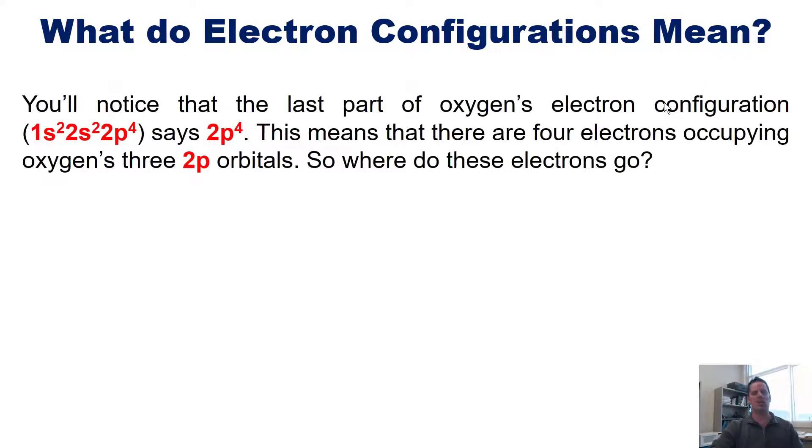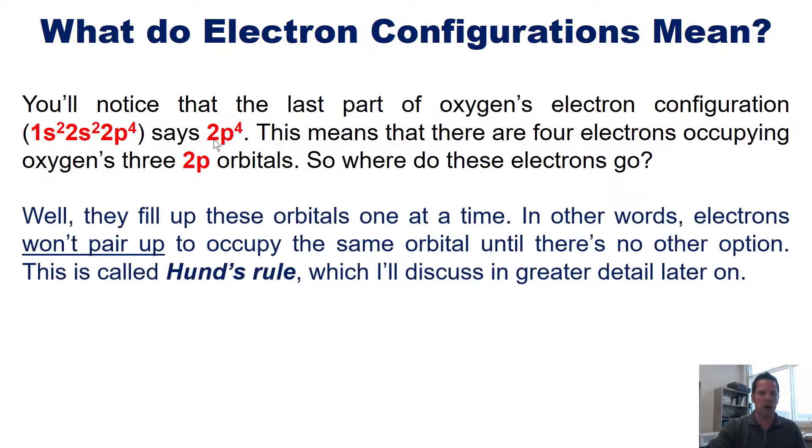Now, you'll notice that the last part of oxygen's electron configuration, 1s2, 2s2, 2p4, says 2p4. Now, this means that there are four electrons occupying oxygen's three 2p orbitals. So where do those four electrons go? Well, they fill up these orbitals one at a time. In other words, electrons won't pair up to occupy the same orbital until there's no other option left. This is called Hund's Rule, which I'll discuss in greater detail later on.